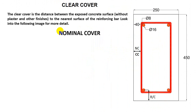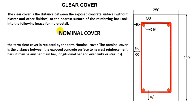Now I will show you about nominal cover. The nominal cover is nothing but the same concept as clear cover — these two terms have the same meaning. The nominal cover is the distance between the exposed concrete surface to the nearest reinforcement bar, whether it is any bar, main bar, longitudinal bar, or even a link or stirrup.